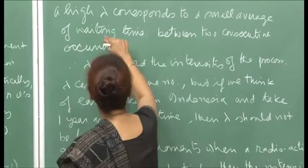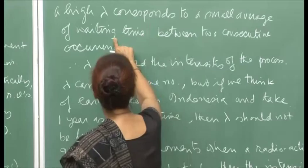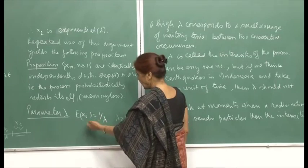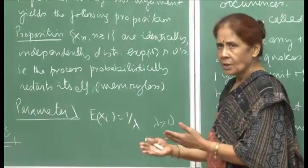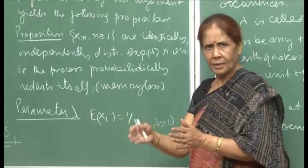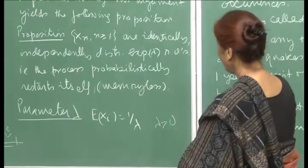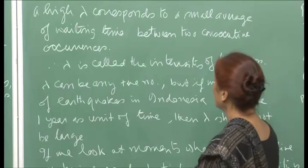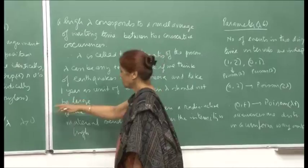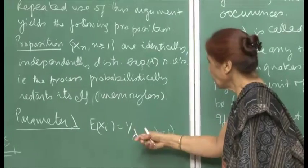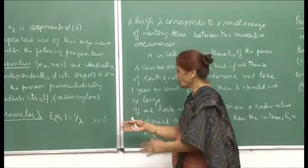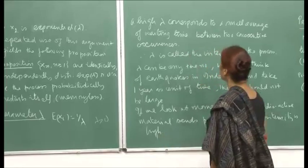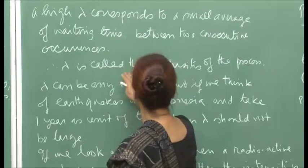A high lambda corresponds to a small average waiting time, since E[xi] = 1/λ. If lambda is large, then 1/λ is small, meaning the arrivals occur at smaller intervals. Conversely, when lambda is small, 1/λ is large and events occur at large intervals. Lambda is therefore called the intensity of the process.